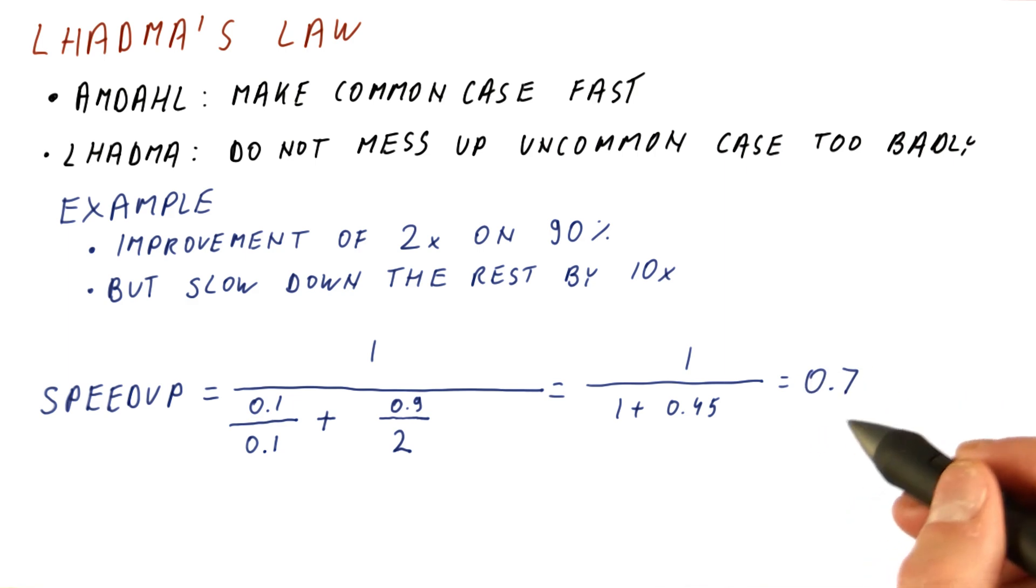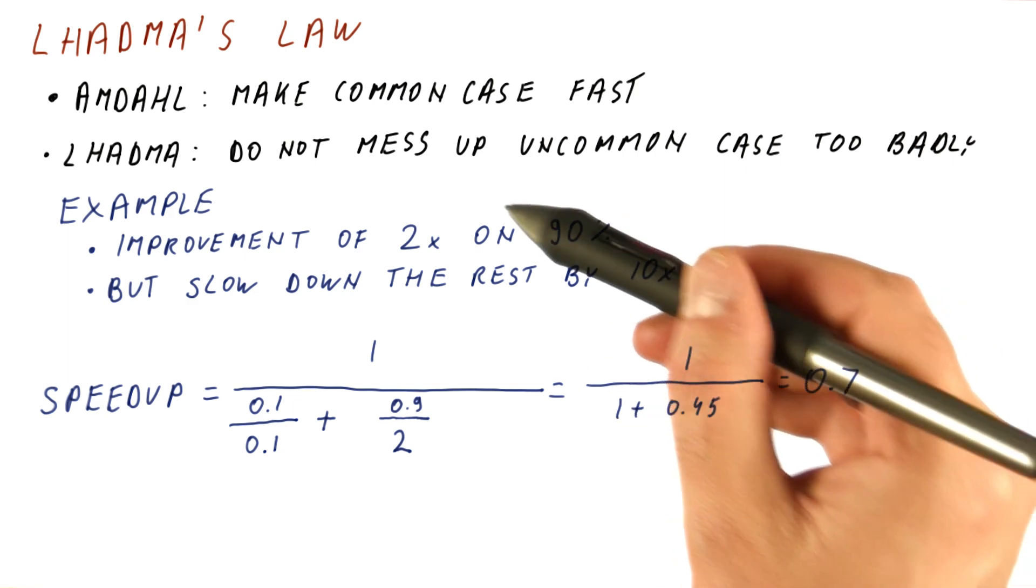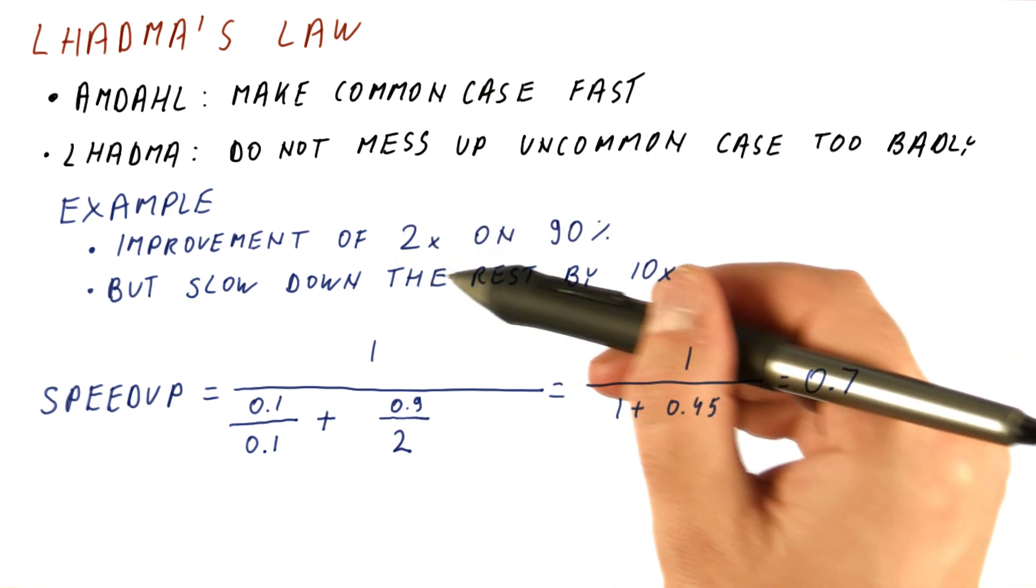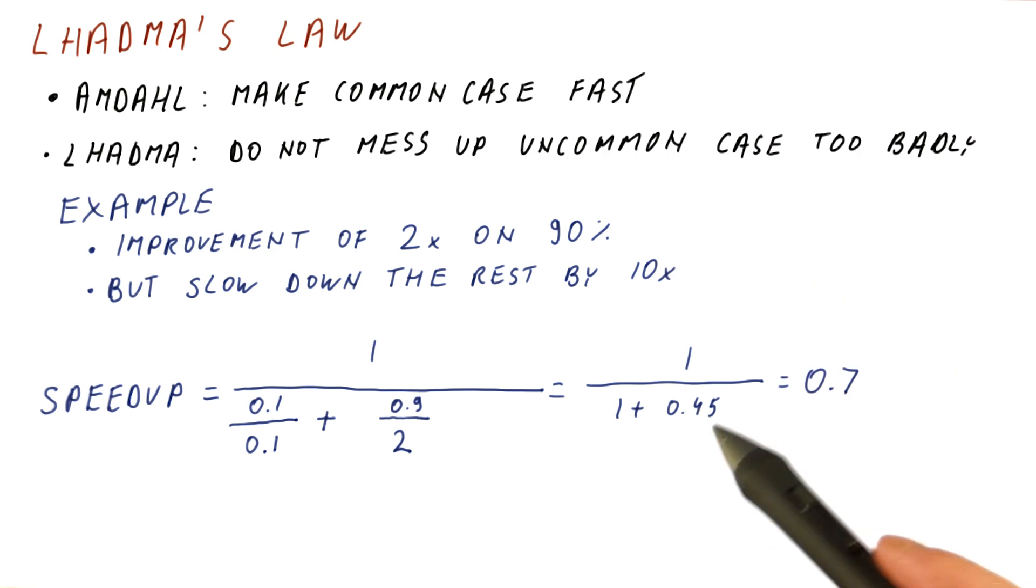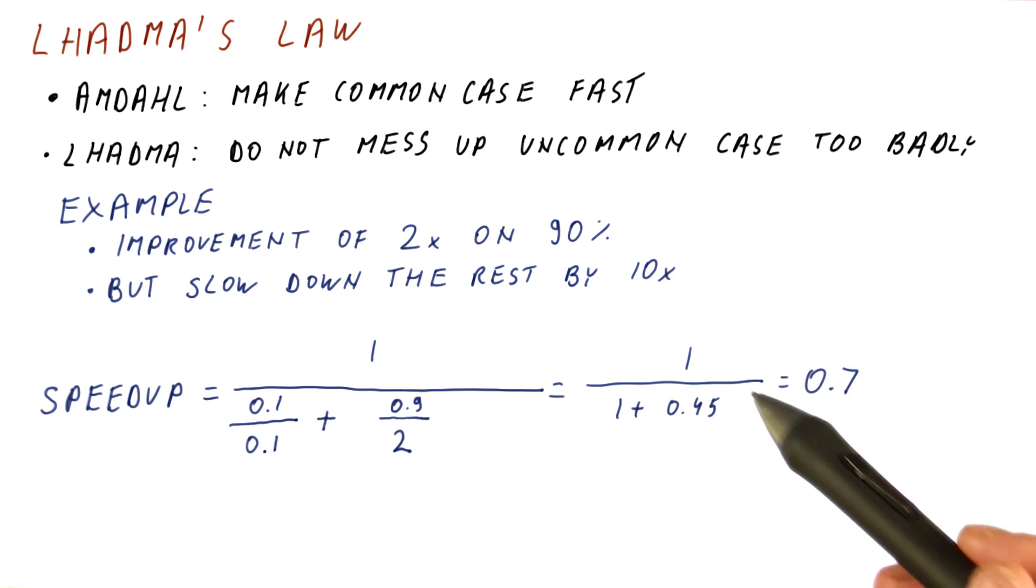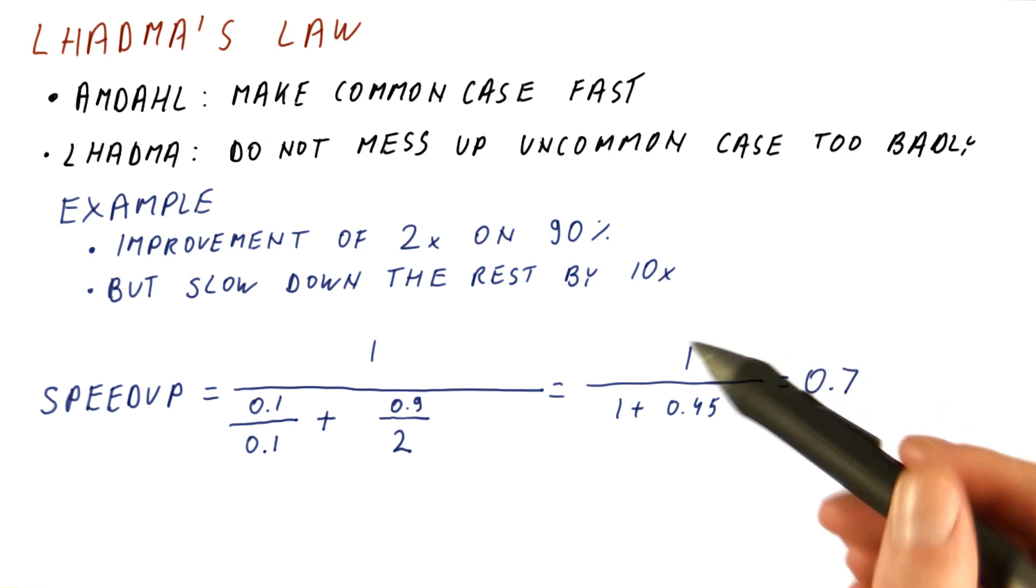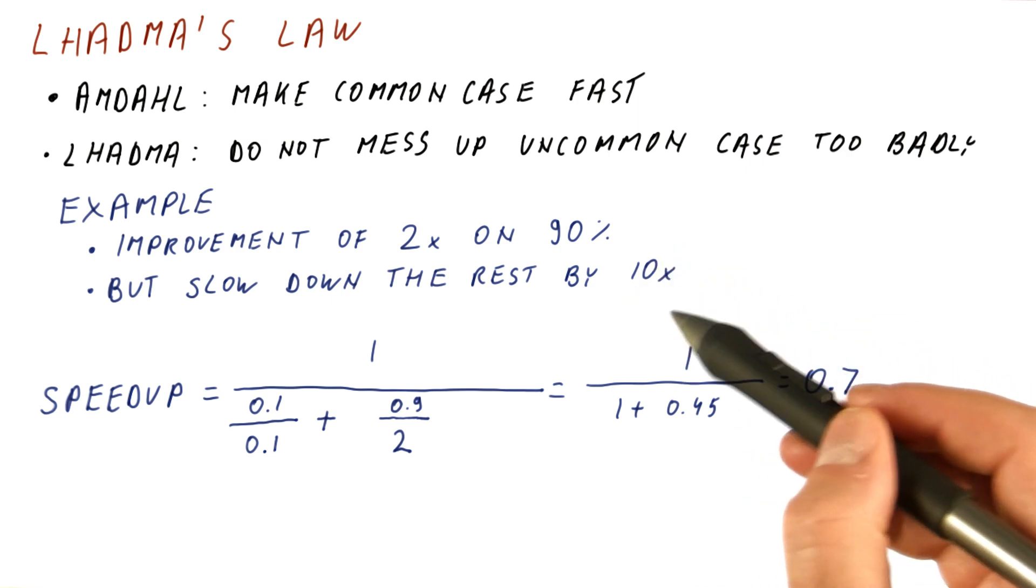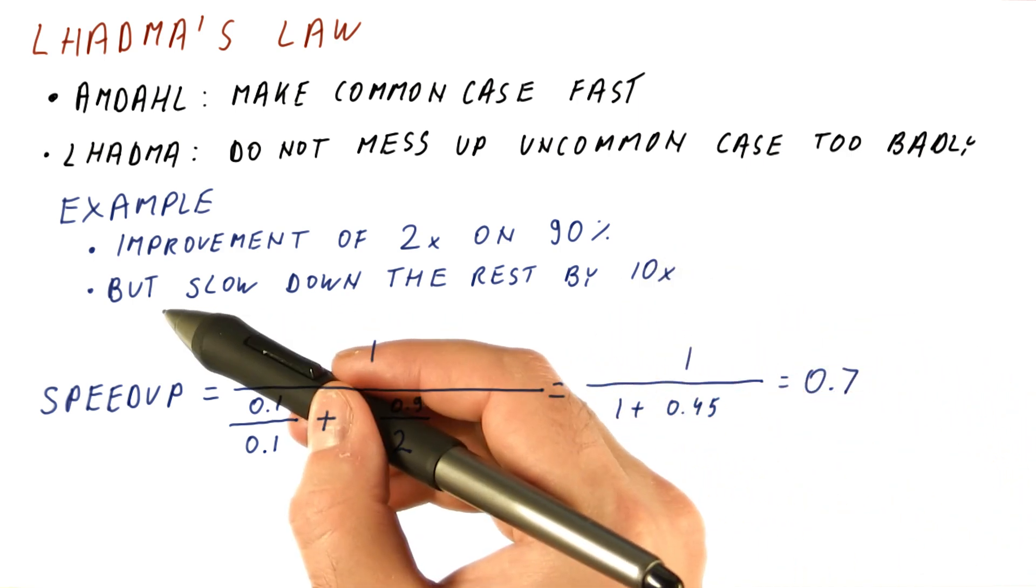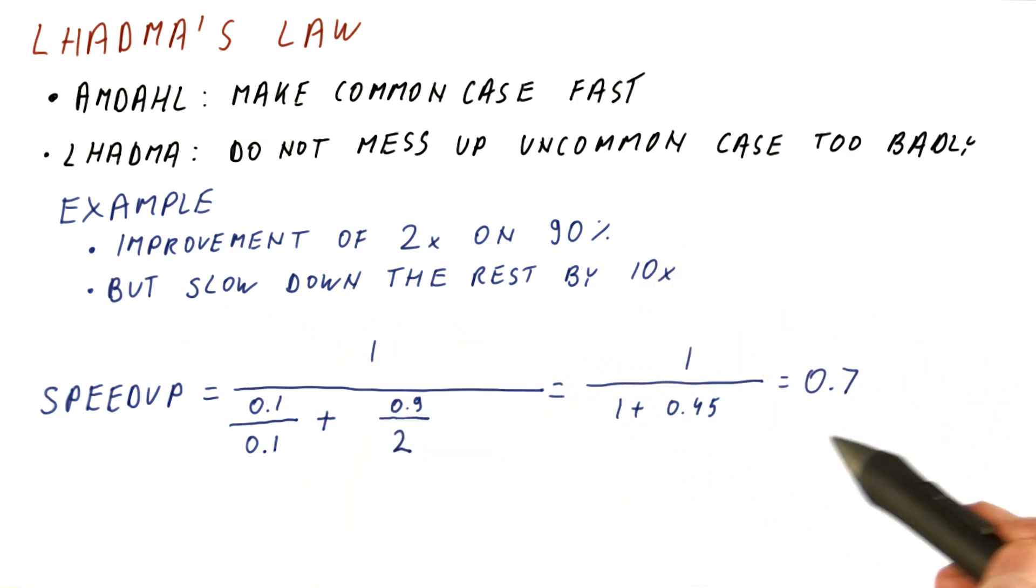So we actually got an overall slowdown. In fact, even with an infinite improvement on the 90%, this would become 0, and we would still have a speedup of 1, meaning no improvement. Basically, if you have a huge worsening on even a small part of the execution time, the overall speedup will not be good.